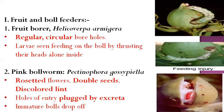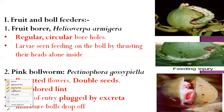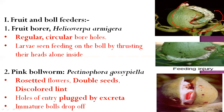Starting with the bollworm complex — the first fruit borer is the American bollworm, scientific name Helicorpa armigera. As shown in the picture, the larva enters inside the boll, creating regular circular holes, and starts feeding on the internal content. These circular holes are identification marks of Helicorpa armigera.